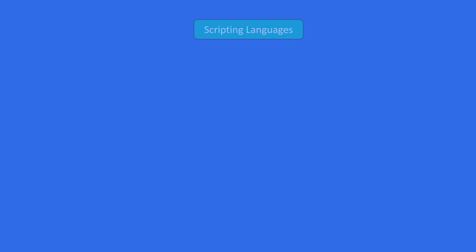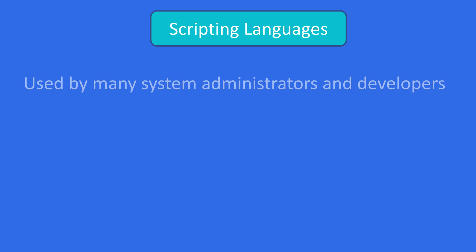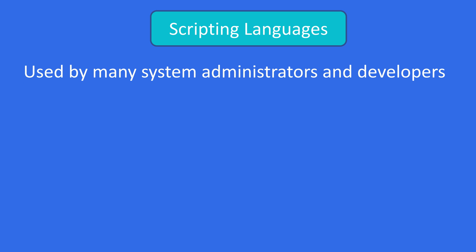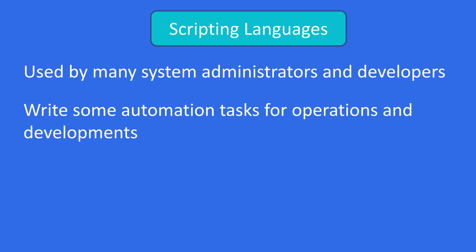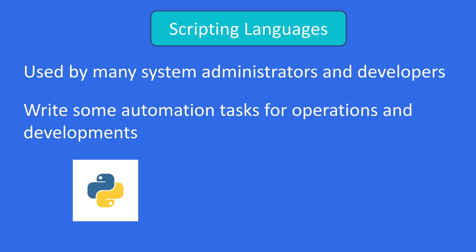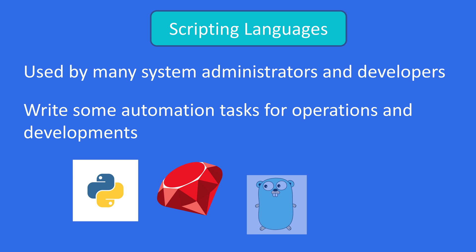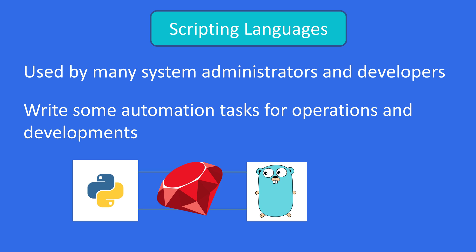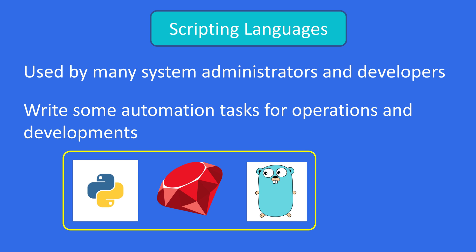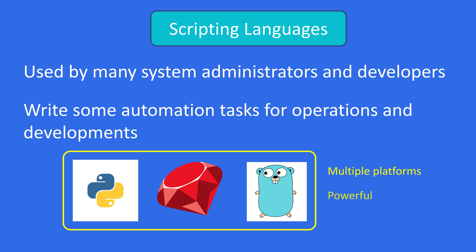Sometimes as a DevOps engineer your manager will ask you to back up data or do system monitoring. You need to know a scripting language to do that automatically — like Bash shell for Linux, PowerShell for Windows, Python, Ruby, or Golang. Python in particular has many libraries and can work with many databases.